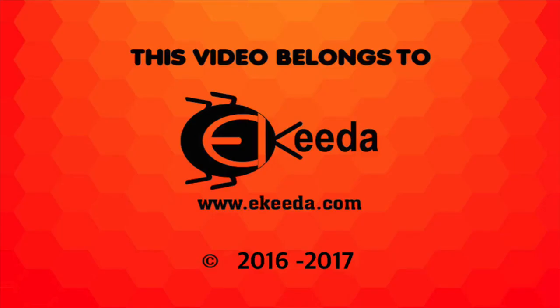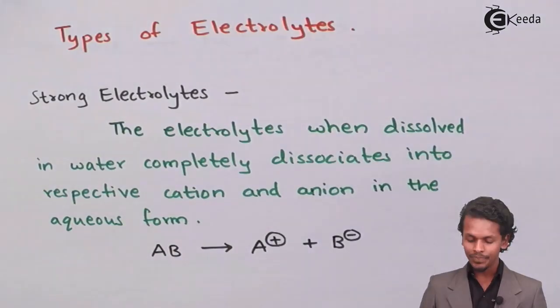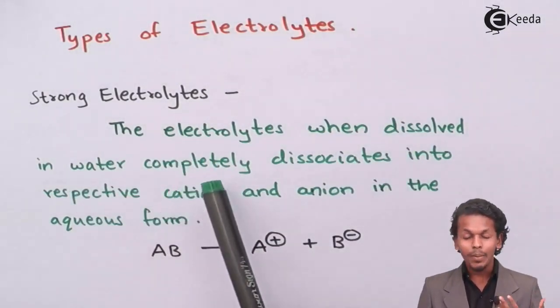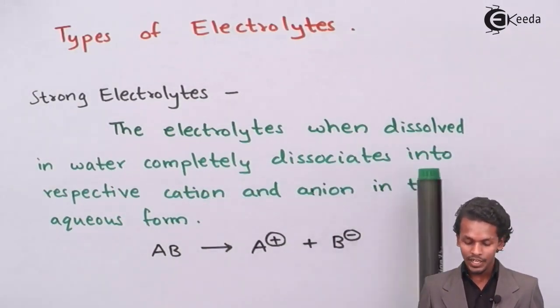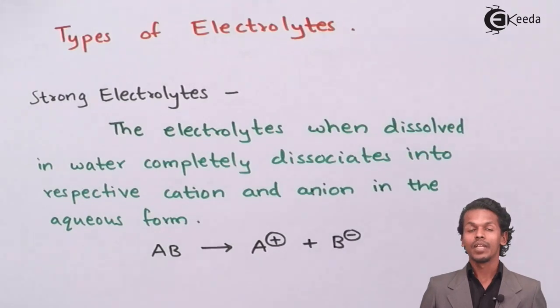So friends, electrolytes are being divided into two parts. The first one is strong electrolyte, which says that the electrolyte when dissolved in water completely dissociates into respective cation and anion in the aqueous form.